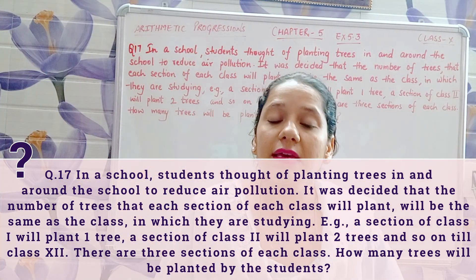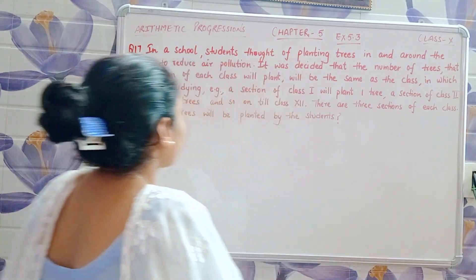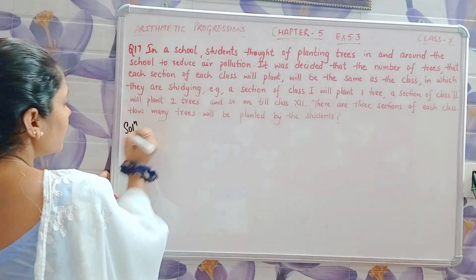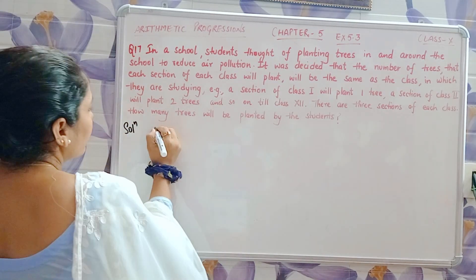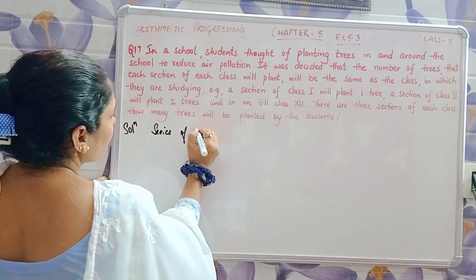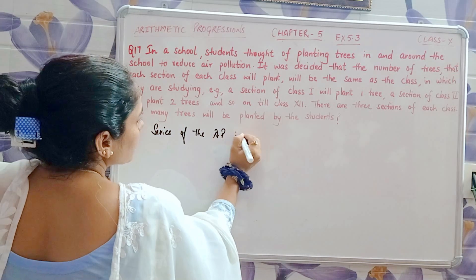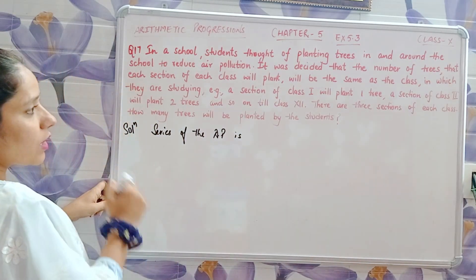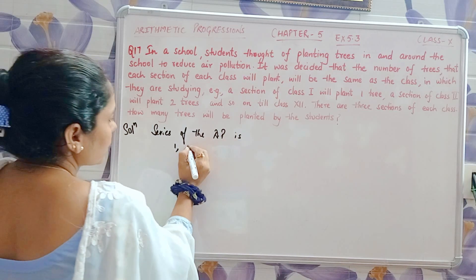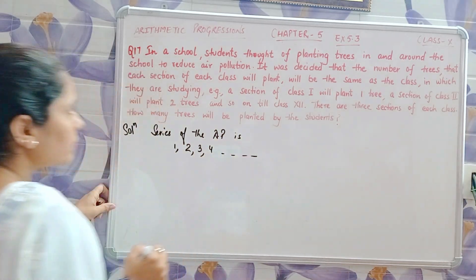We need to find out how many trees will be planted by the students. First, let's build the AP series. The series is: 1, 2, 3, 4, and so on.